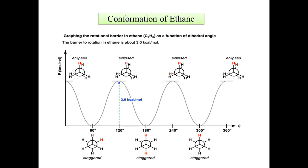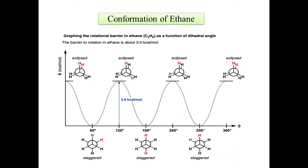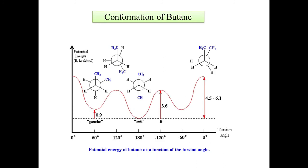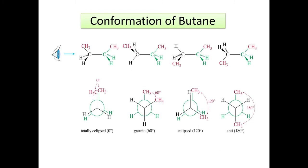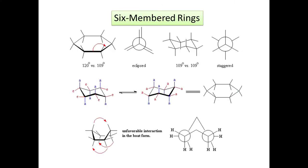The energy level diagram for ethane shows potential energy versus angle of rotation. The eclipsed conformation is at higher energy and lower stability, while the staggered conformation is at lower energy and higher stability. The rotational barrier for ethane is approximately 3 kcal/mol. For butane, the potential energy diagram shows total eclipsed, gauche, eclipsed, and anti conformations; the torsional strain values differ — approximately 3.6 and 4.5 to 6.1 kcal/mol — as the torsional angle increases.